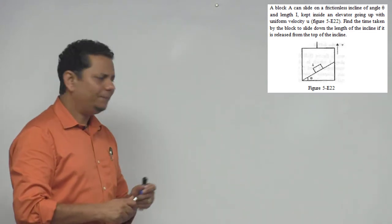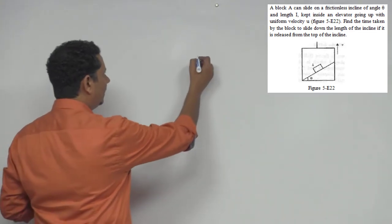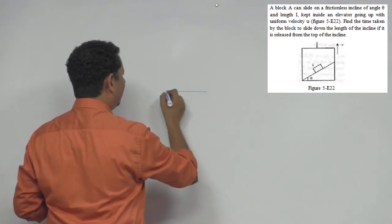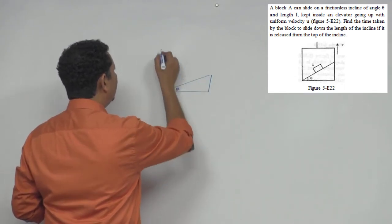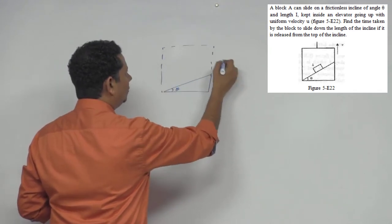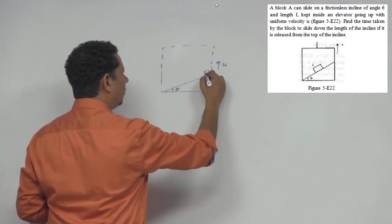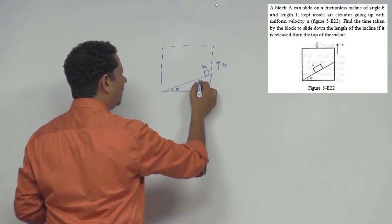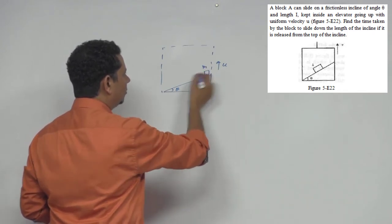So again, simple question. The scenario is, this is your incline plane, we have a lift moving with uniform velocity. So this is your incline plane, this is the block, and the length is L.